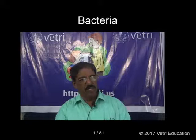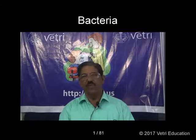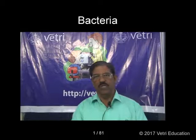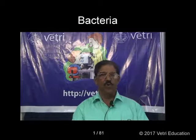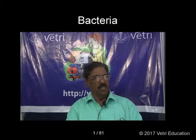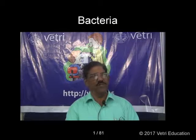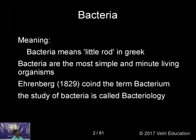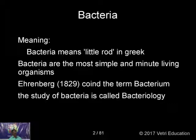Good evening students. The other day we discussed about viruses, where you can find no cell wall, no protoplasm, only a nucleic acid with protein — the most primitive form. The next development and smallest living organism is bacteria. Bacteria means 'little rod' in Greek language. They are the most simple and minute living organisms, having a prokaryotic nucleus and no mitochondria, no endoplasmic reticulum, no golgi bodies.